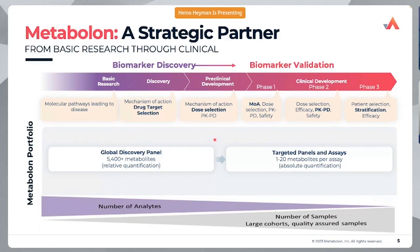Looking more specifically across the clinical pipeline, metabolomics plays a role quite broadly. In the basic research and discovery stages, we want our lenses open as far as possible to look at as many changes as possible to understand what is happening in a new model. But as we move along the clinical pipeline, the questions become very targeted, the hypotheses become very targeted, and the analysis becomes very focused — moving from a global approach to a very targeted approach.